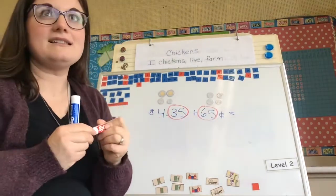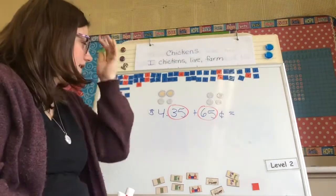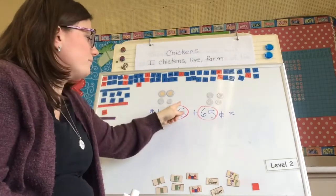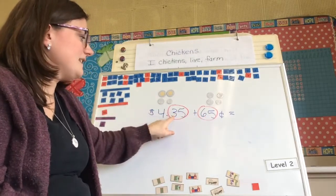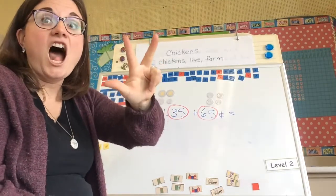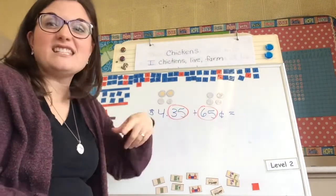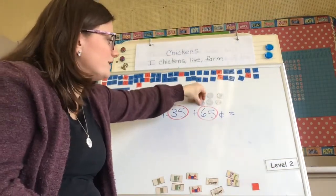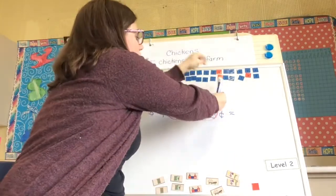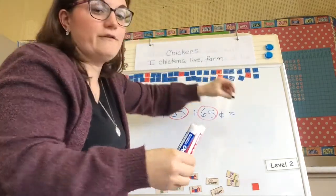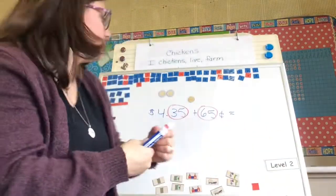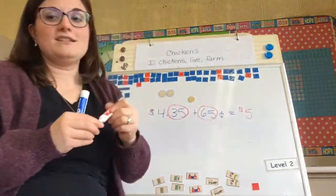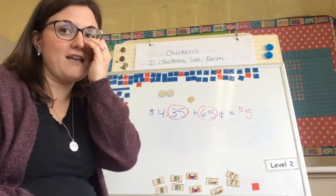Our $0.35 plus our $0.65 is what we want to focus on. We can start at $0.65 — bringing over the five more gives me $0.70, then count up three more tens: $0.80, $0.90, that makes $1.00. Our $0.35 and our $0.65 make $1.00, so we can trade that in for $1.00. I have $4.00 here, and adding my cents together gives me another dollar, so I have $5.00.